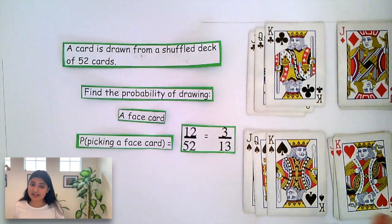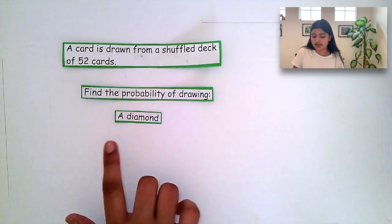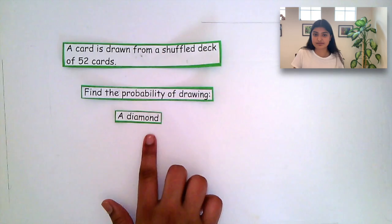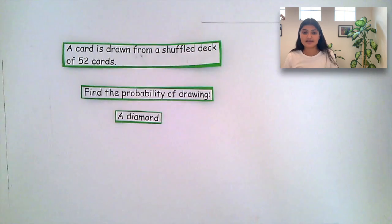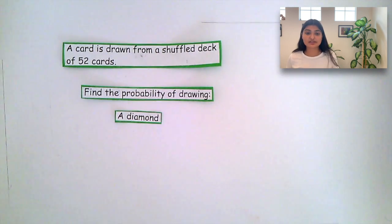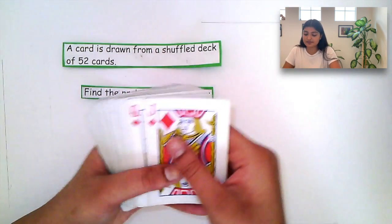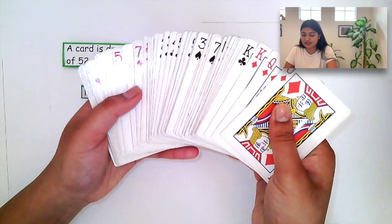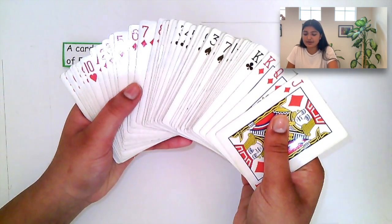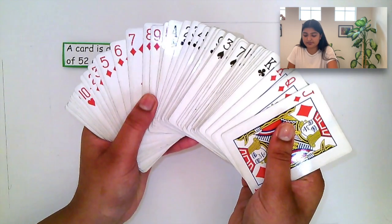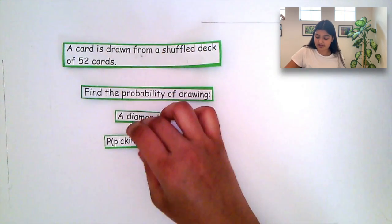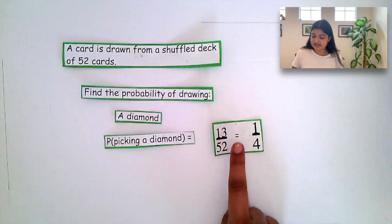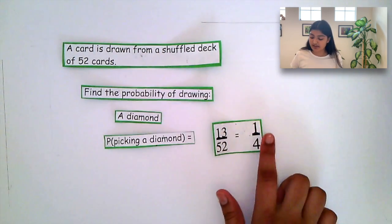Let's look at yet another example. Find the probability of drawing a diamond. Remember, in this deck of 52 cards, there are 4 different suits, one of them being a diamond, and each of these suits has 13 different cards. If we count all of the diamonds present in this deck, we can see that there would be a total of 13. So we know that the probability of picking a diamond is 13 over 52, which can be simplified to 1 over 4.